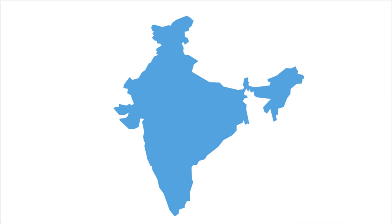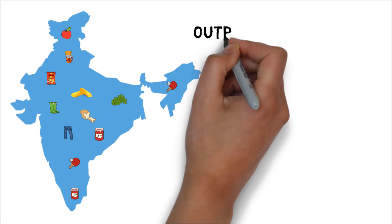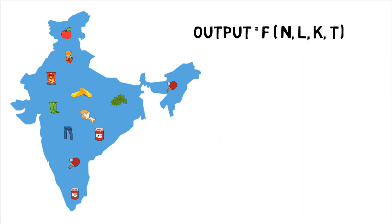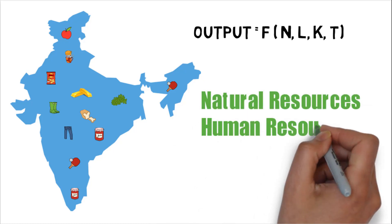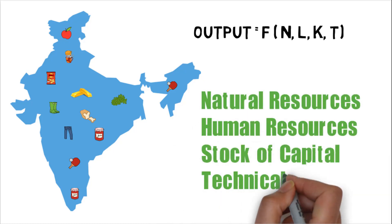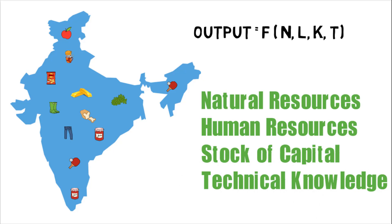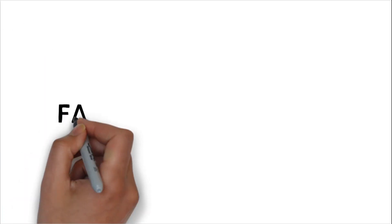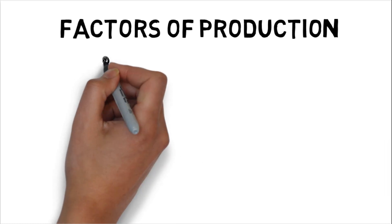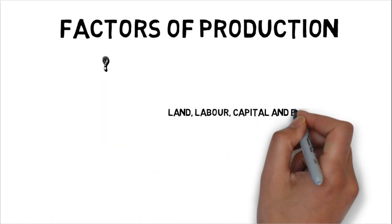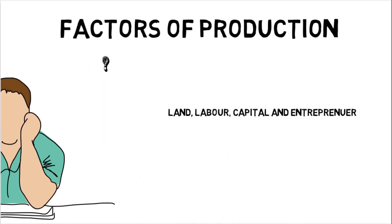Aggregate supply is the total amount of output that a country produces, and this output depends upon certain components. The four main components on which a country's output depends are natural resources, human resources, stock of capital, and technical knowledge — these are nothing but the factors of production: land, labor, capital, and entrepreneur.